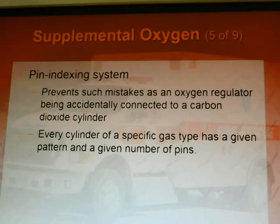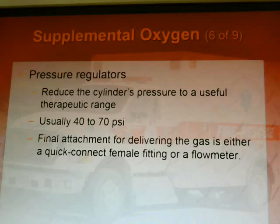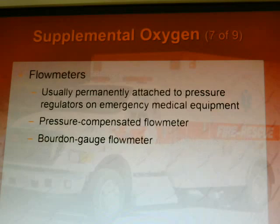There's a pin index system that prevents mistakes such as an oxygen regulator being accidentally connected to a carbon dioxide cylinder, or an O2 tank being confused for an acetylene tank. Every cylinder has a specific gas type with a given pattern and number of pins. Pressure regulators reduce the cylinder's pressure to a useful therapeutic range, used between 40 and 70 psi. The final attachment for delivering the gas is either a quick-connect female fitting or a flow meter.